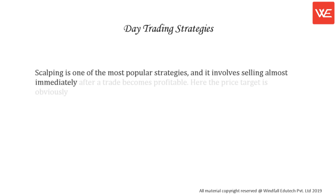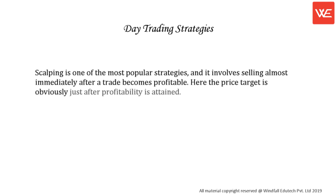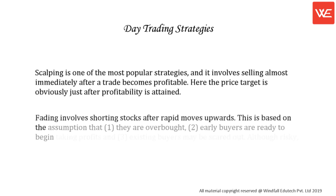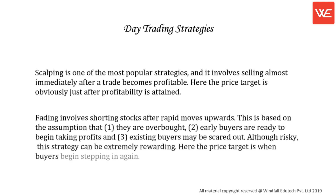Scalping is one of the most popular strategies — it involves selling almost immediately after a trade becomes profitable. The price target is obviously just after profitability is attained. Fading involves shorting stocks after rapid moves upwards. This is based on the assumption that: 1) they are overbought, 2) early buyers are ready to begin taking profits, and 3) existing buyers may be scared out. Although risky, this strategy can be extremely rewarding.